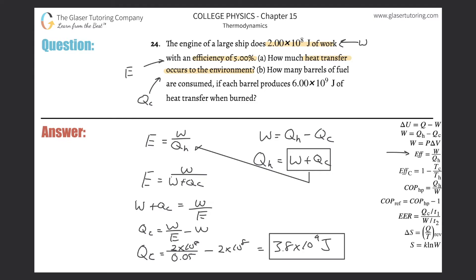That takes care of letter A. Now letter B: How many barrels of fuel are consumed if each barrel produces 6×10^9 joules of heat transfer when burned?